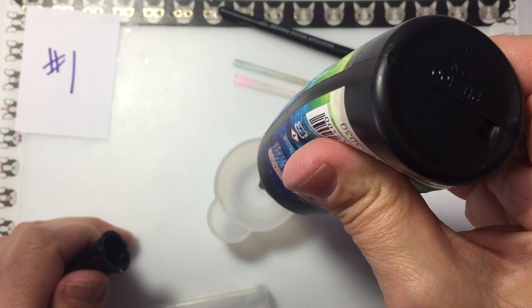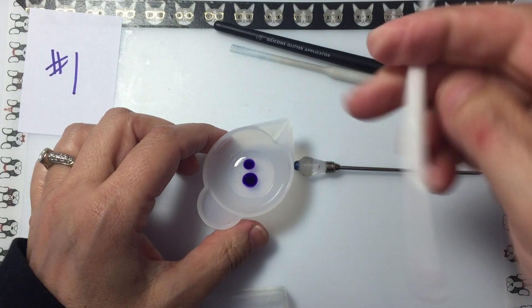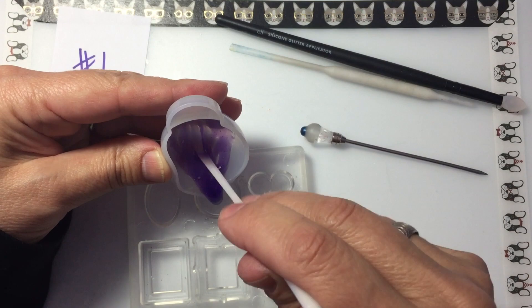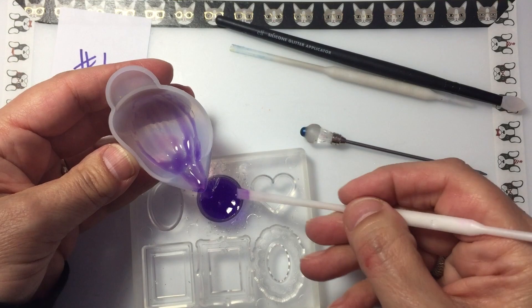The first method I'm showing for coloring resin is using the traditional method of UV pigment colors. These always work great. I will let you know throughout this video I did not use a heat embossing gun to pop any of the bubbles, so when you work with resin it's a really good idea if you don't want the bubbles to use a heat gun.